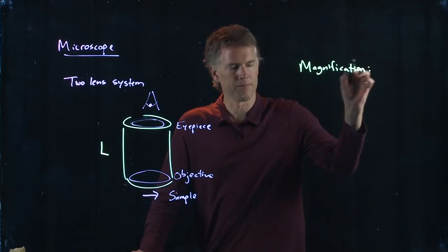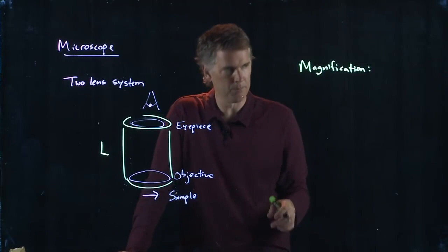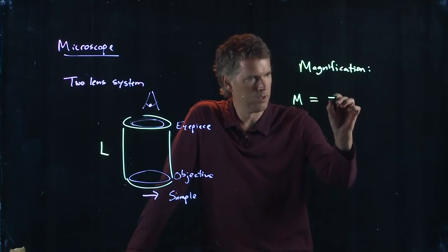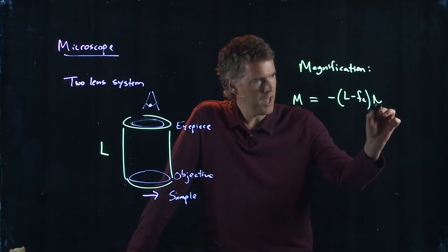Okay, and this is a little bit tough, the derivation, so we're going to jump to the answer and if you really want to see the full derivation you can come visit me in my office. But the magnification M of a microscope is the following: negative L minus FE times N divided by FO times FE.